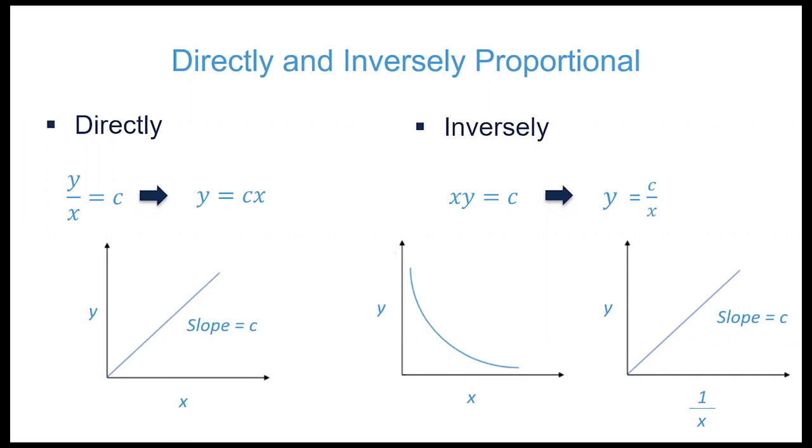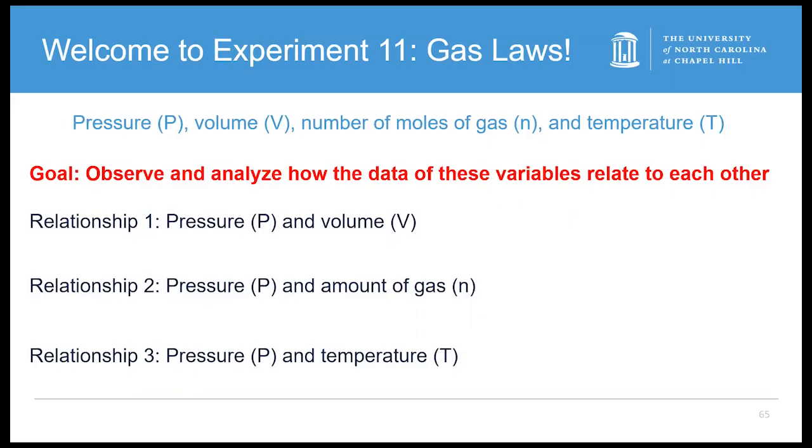Directly proportional means that if one increases, the other does too. And inversely proportional means when one increases, the other decreases. We will be exploring these relationships with our different setups. Try to understand where the data comes from so you can place the numbers into context.